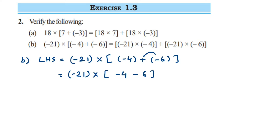So minus 21 multiplied by (minus 4 minus 6). Minus minus is plus, so we add them and the sign will be negative: minus 10, because 4 plus 6 is 10 and both numbers have a negative sign. Now 21 into 10 is 210, and minus into minus is plus, so we get positive 210. As explained before: an even number of negative signs gives a positive result; an odd number of negative signs gives a negative result.